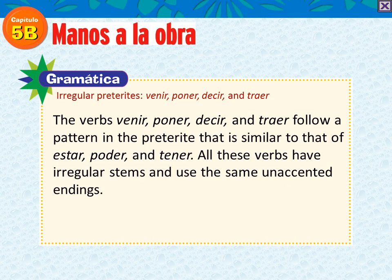The four verbs that we are going to focus on this chapter — and we already had you fill this in on your chart — are venir, poner, decir, and traer. And for those of you who don't know, they mean to come, to put or to place, to say, and to bring. They're going to follow a pattern that's similar to estar, poder, and tener from the last chapter.